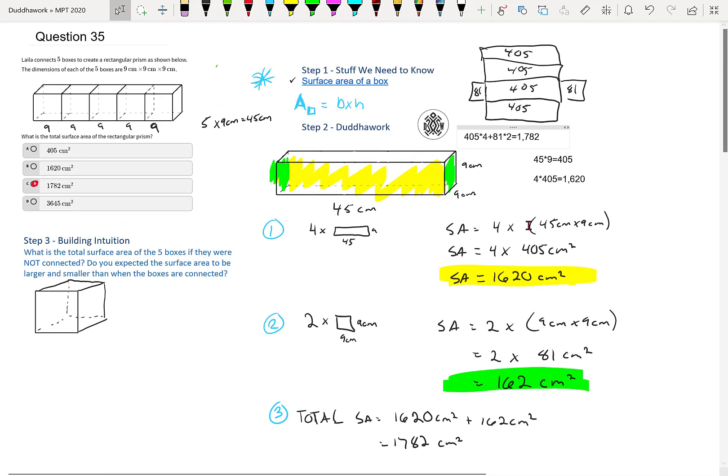And whatever works with you, right? It depends on everyone. But let's go ahead and build some intuition, because let's go a little bit further. So what is the total surface area of the five boxes if they were not connected? So take each box, find its surface area, and add them together, or do times 5, right? Because they're all the same. And do you expect the surface area of the five boxes when they're not connected to be larger or smaller than when they are connected?